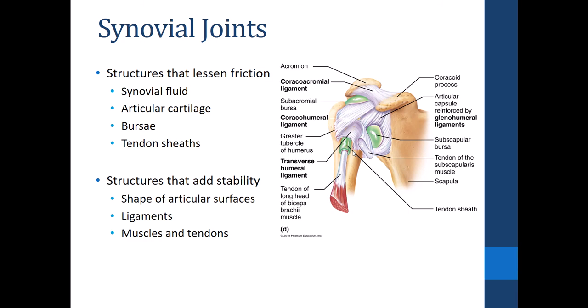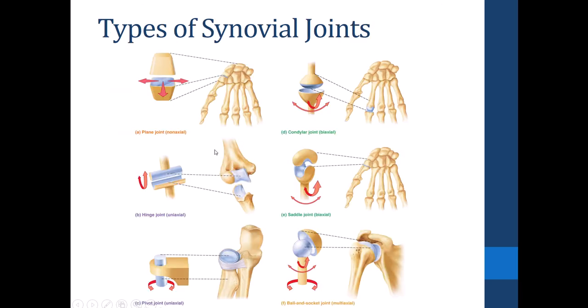Joint stability is influenced by several factors. The shape of the articular surfaces matters — a deep socket is more stable than a shallow one. Ligaments are a major stabilizing factor; more ligaments generally means greater stability. However, the biggest stabilizing factor for synovial joints is actually muscle tone: muscles in a constant state of semi-contraction pull tendons taut, which helps stabilize the joints, particularly in the limbs.